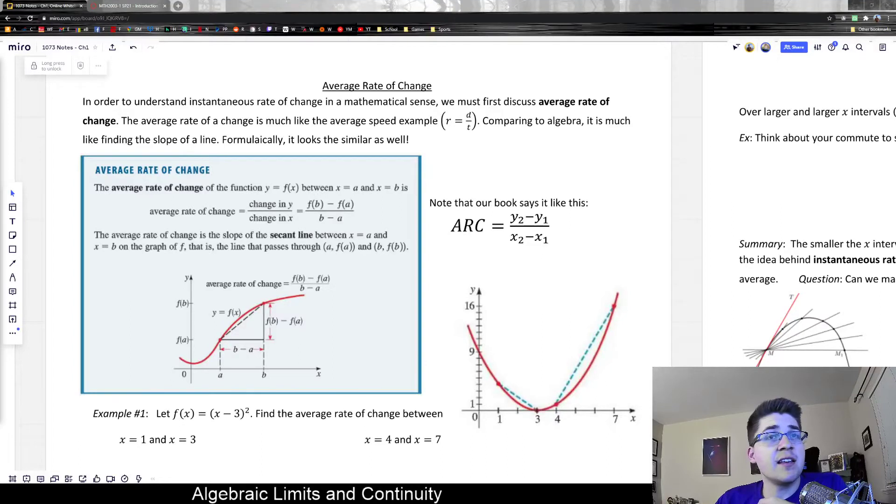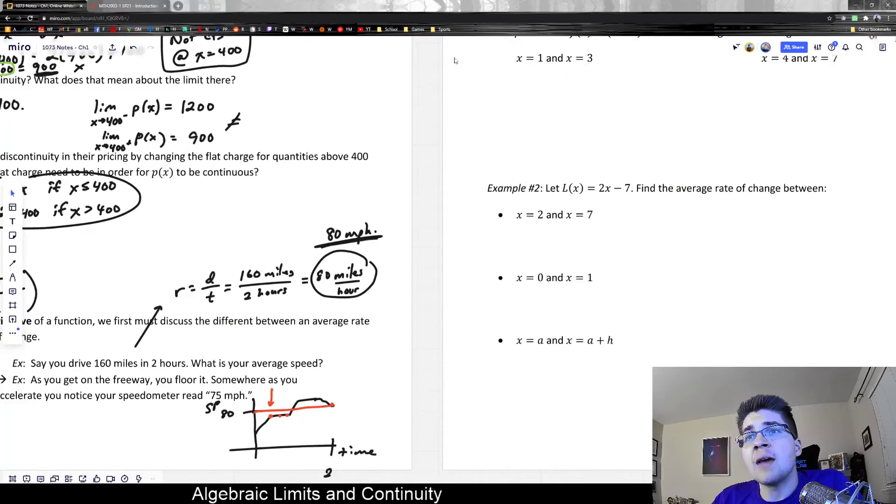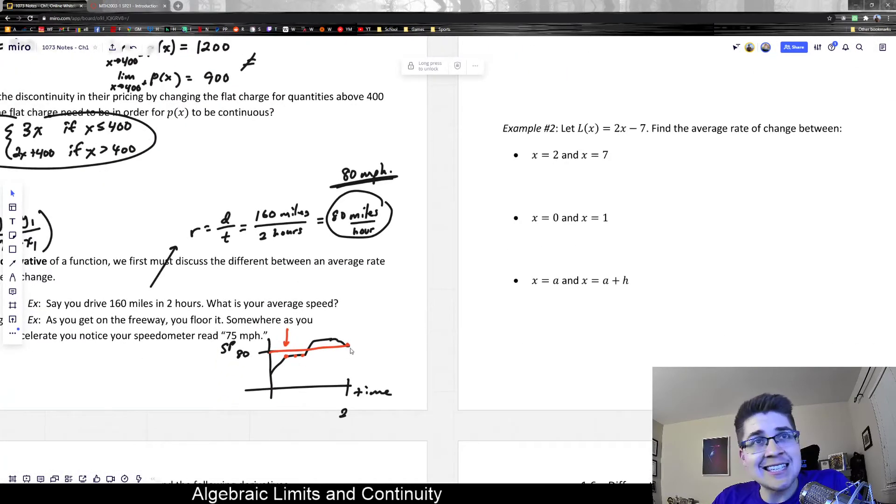Finding the average rate of change is synonymous to finding the slope of a line. As we were talking about in the last video, a lot of times a graph might not have a consistent slope to it.